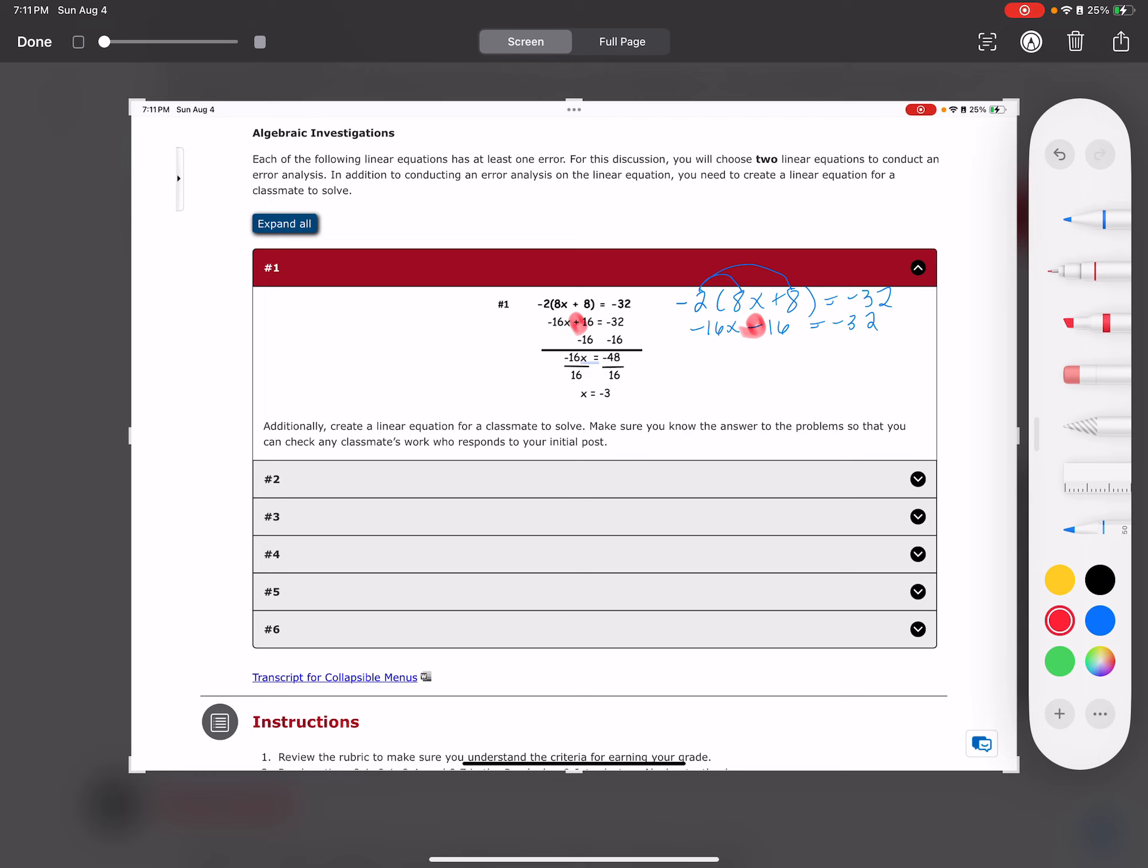Then I pretended like they didn't make an error, so I started fresh from step two: negative 16x plus 16 equals negative 32. I'm trying to find their next mistake. I subtract 16 from both sides, and I get negative 16x equals negative 48. I look here and see they agree: negative 16x equals negative 48. So we agree with that.